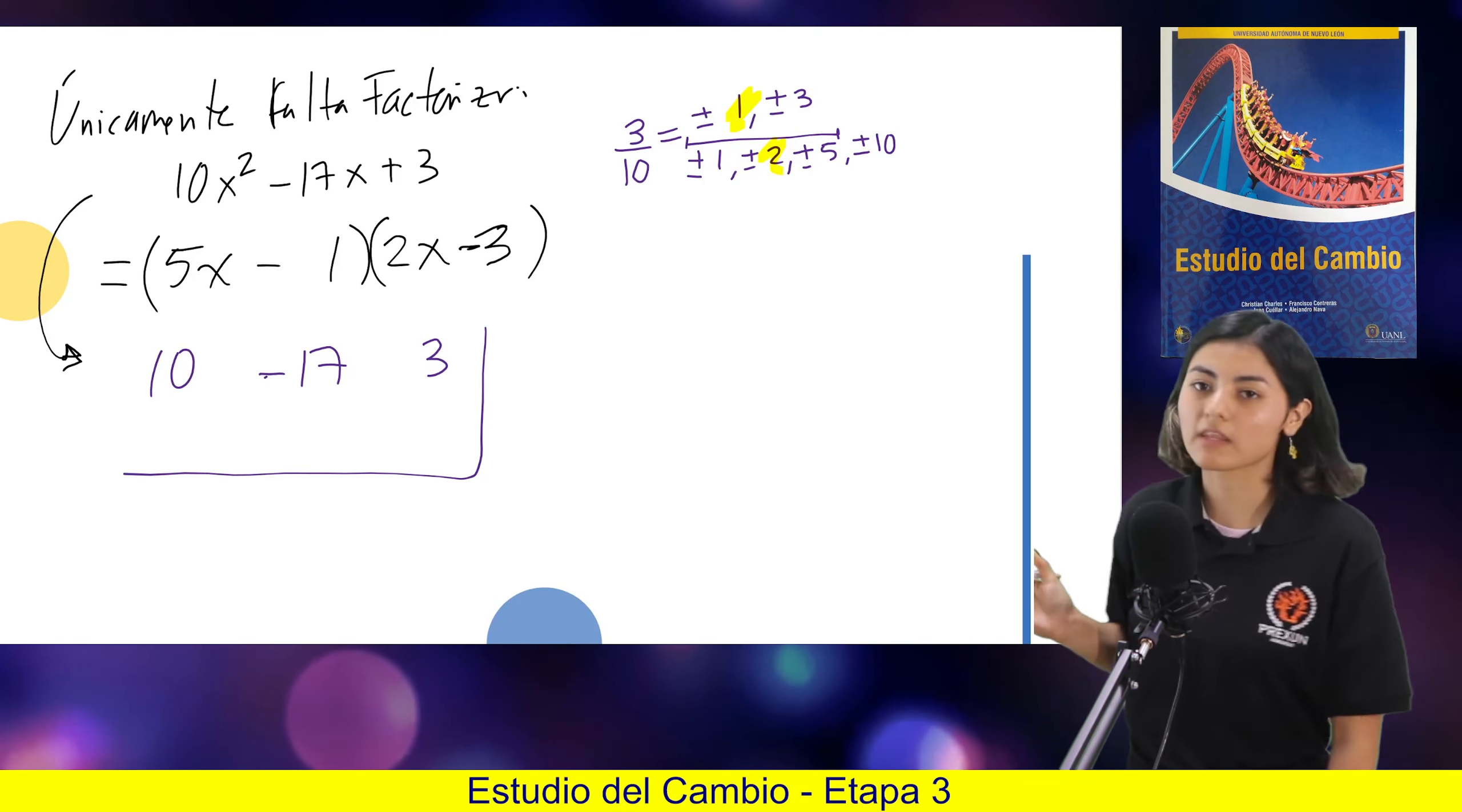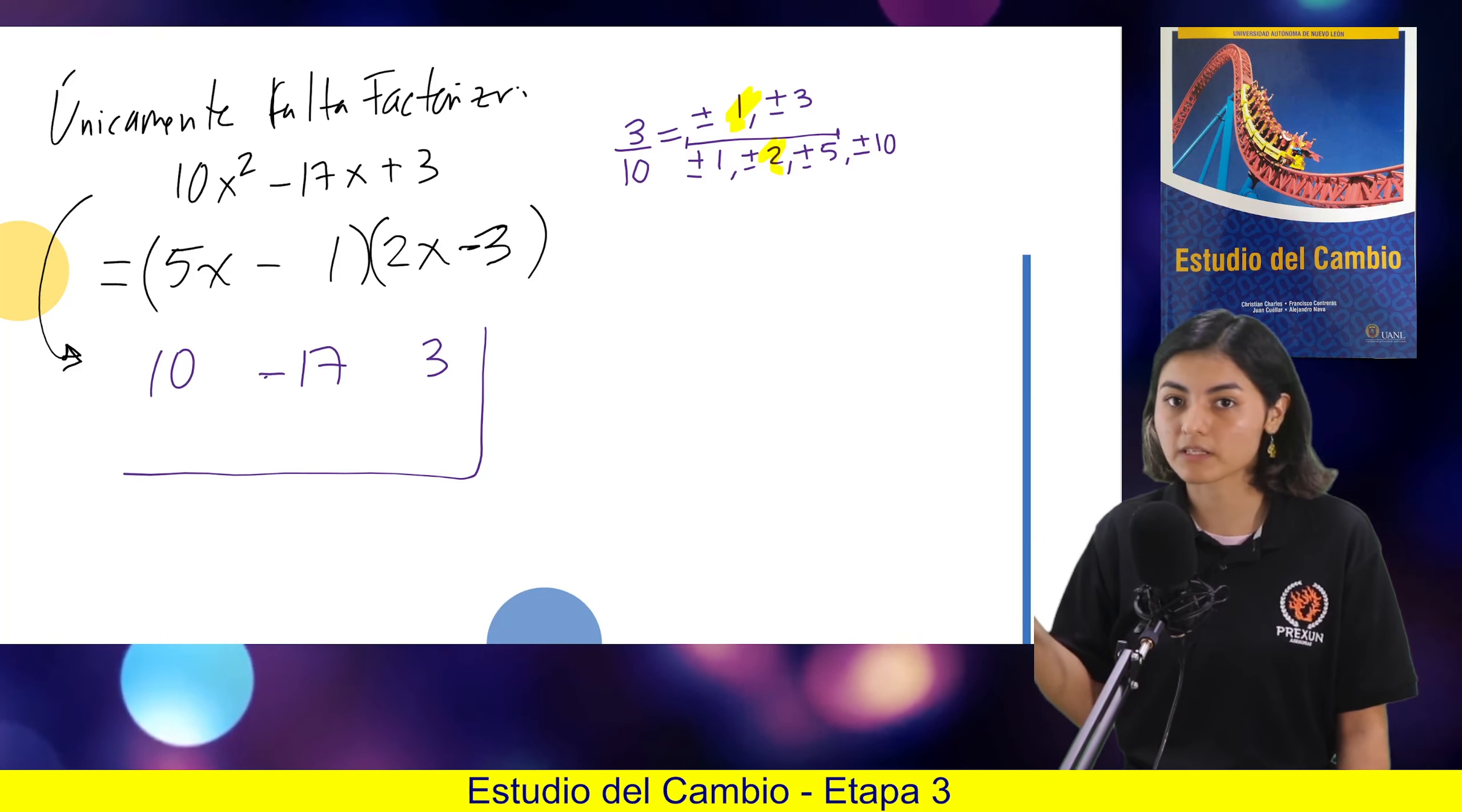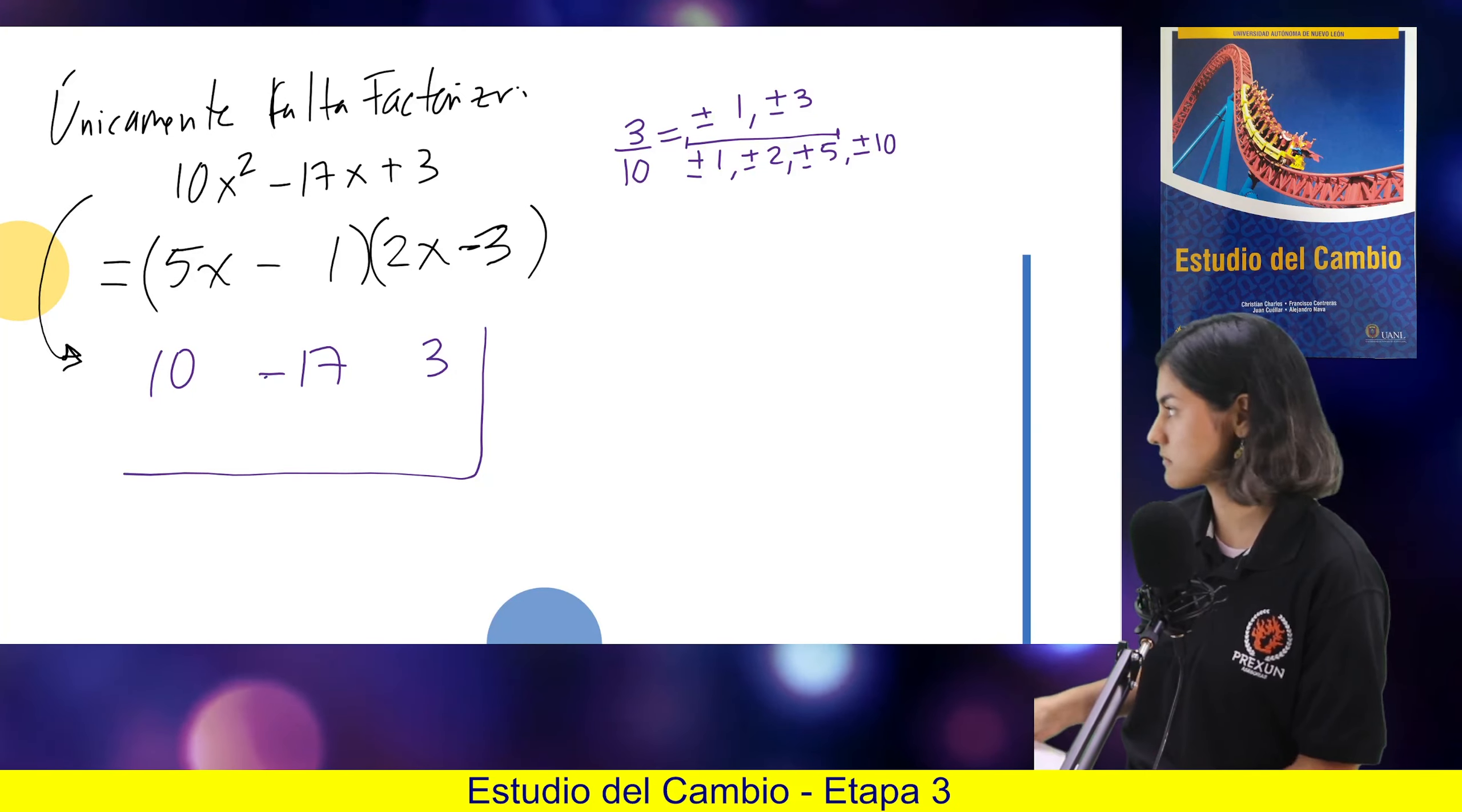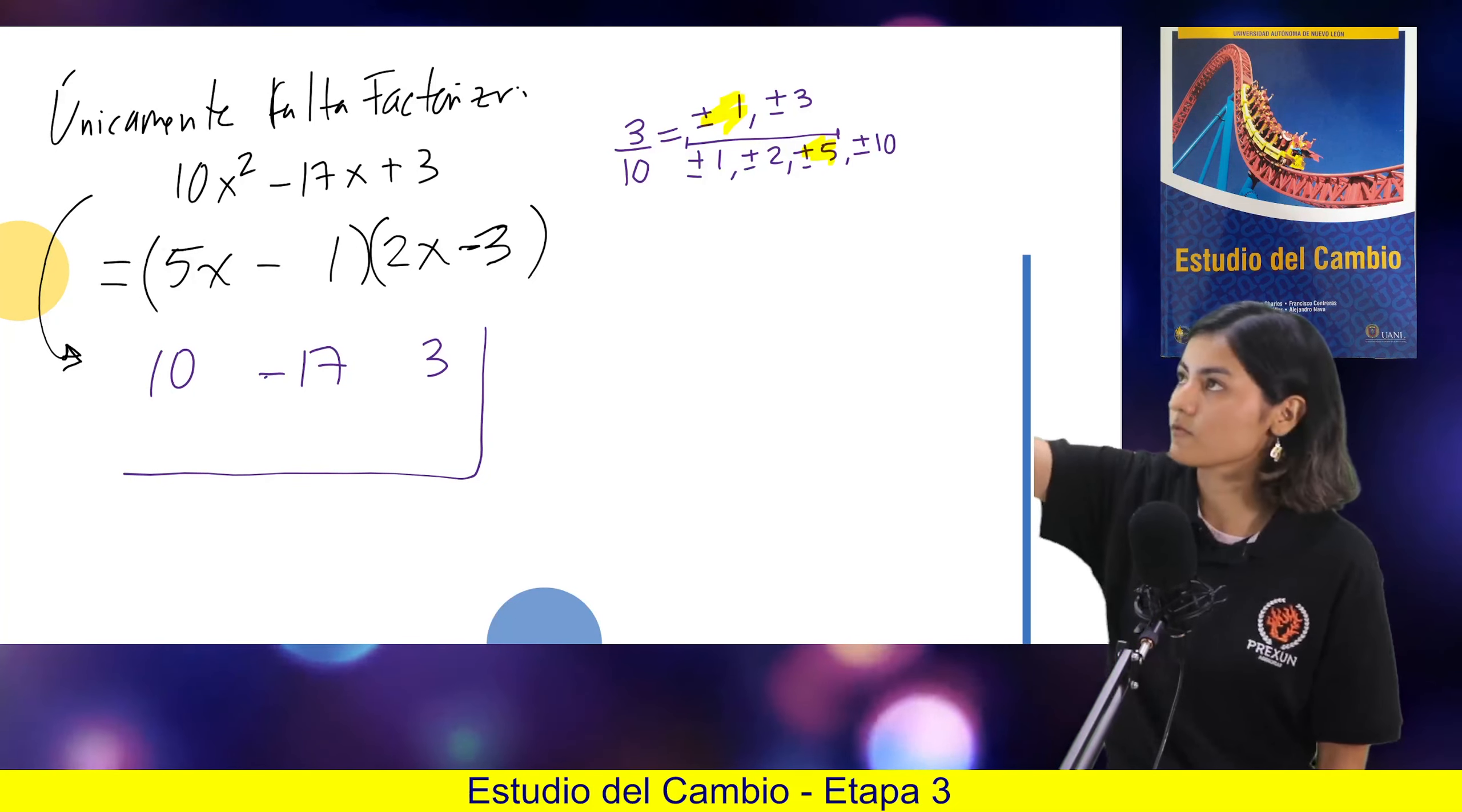Y entonces empezamos a hacer parejas. Por ejemplo, el 1 medio, tanto positivo como el negativo. Y esas son posibles raíces racionales, posibles. Puede que no, puede que sí. Entonces, por ejemplo, ya eligiendo una de esas, podríamos elegir el 1 quinto. El 1 con el 5, y ya, eso forma un quinto.